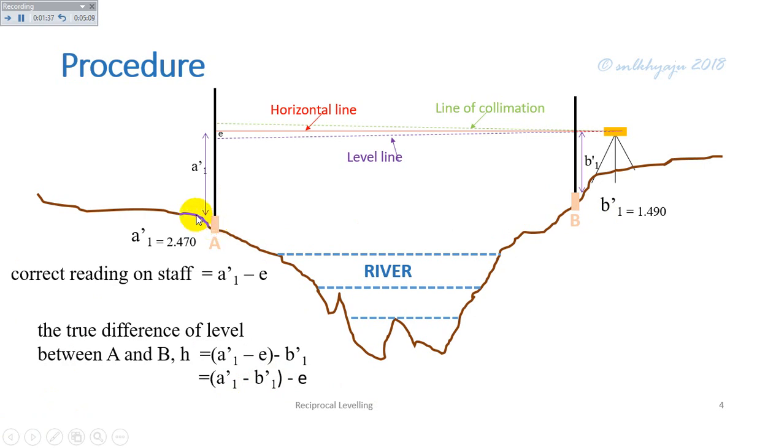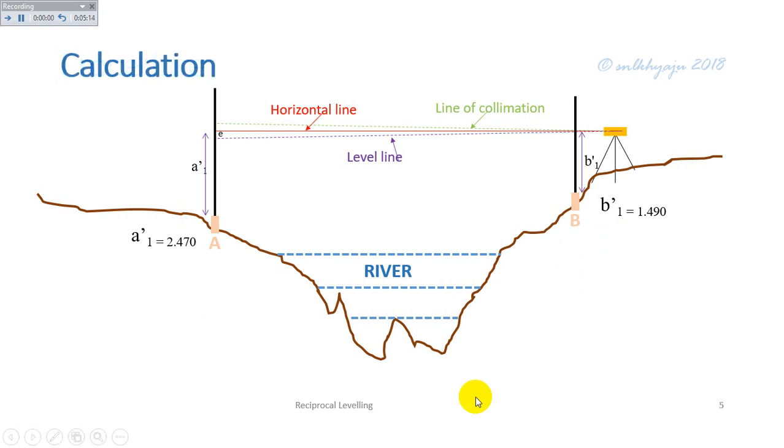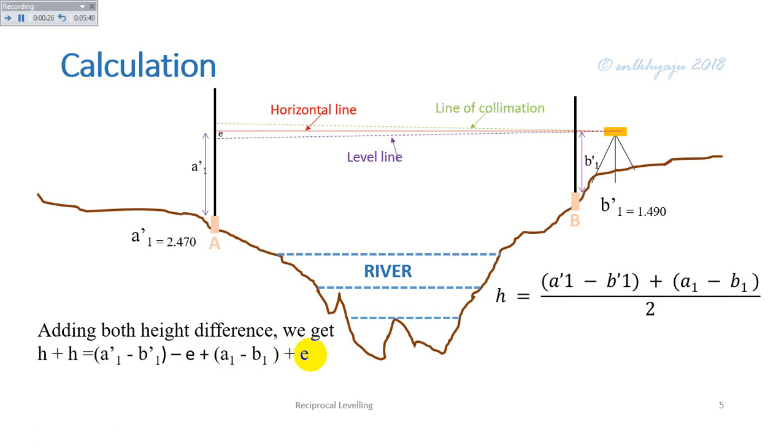Now, calculation. Adding both height differences as we obtained from previous, we get h plus h equals a1 dash minus b1 dash plus a1 minus b1 plus 2e. Solving, we get h equals (a1 dash minus b1 dash plus a1 minus b1) divided by 2. The true height difference between A and B can be calculated as 0.98 meters.